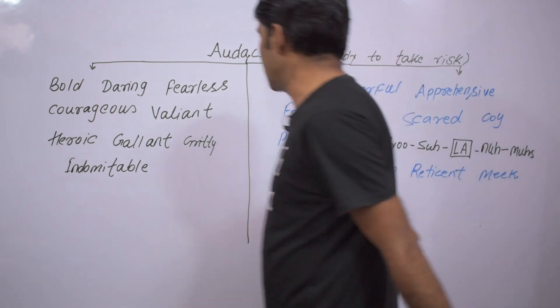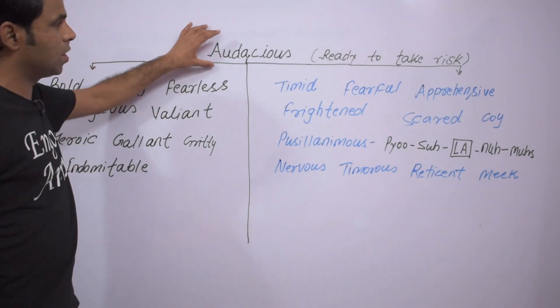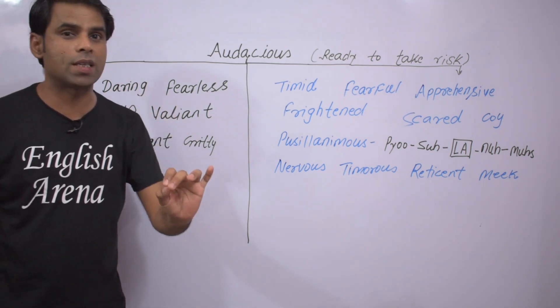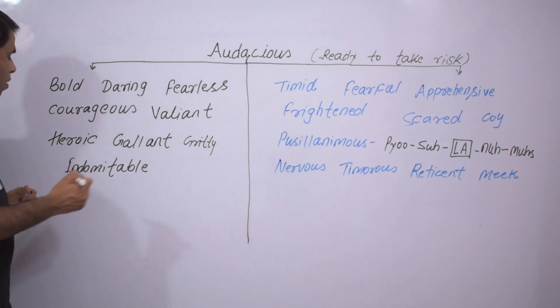So let's start. As I told you, the word is audacious. The meaning of audacious is someone who is ready to take risk, someone who is brave. The first synonym would be bold or daring.